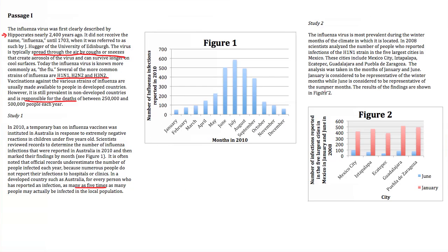Study 2 gives us infection rates for five different cities in Mexico, and instead of reporting infection rates for every month of the year like Study 1, they report infection rates only for the months of June and January. They do this because June represents the summer and January represents the winter. From Figure 2, you'll notice that many more people end up with the influenza virus in the winter months than in the summer months.